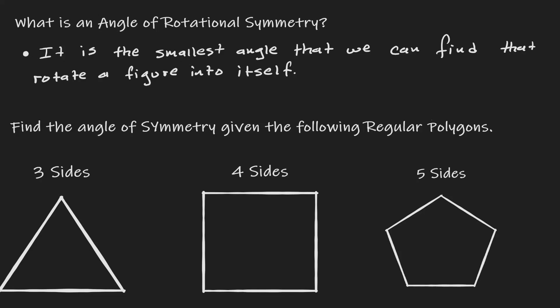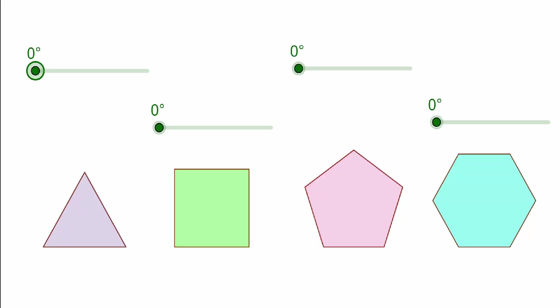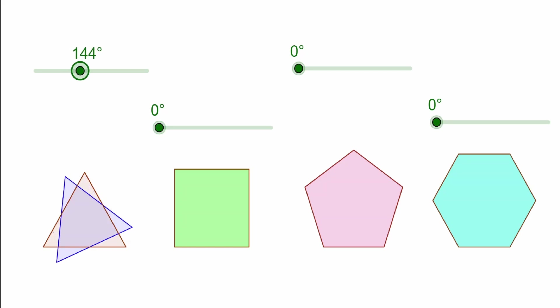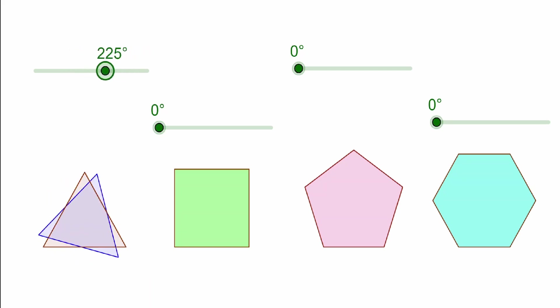Let's take a look at the following animation to visualize this idea. Here we have four regular polygons. Let's concentrate on the triangle first. This green bar will be displaying the angle of rotation. Notice that when I'm scrolling to the right, my figure is rotating that many degrees. So let's go back to zero degrees. Now let's find an angle of rotation that will rotate the figure into itself, and whatever that angle is, we can call that the angle of rotational symmetry.